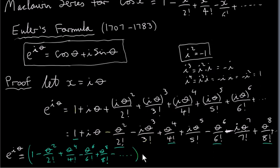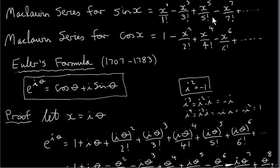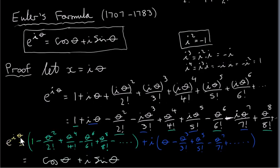Now let's look at the imaginary part — all the terms that contain i. Taking i out of those terms, we have theta, minus theta cubed over 3 factorial, theta to the power of 5 over 5 factorial, then minus theta to the power of 7 over 7 factorial, etc. This series is the Maclaurin series for sin of x, if we replace x with theta. So indeed, e to the power of i times theta can be written as cos of theta plus i times sin of theta. Note that theta must be in radians — nothing is valid if theta is in degrees; everything is valid if theta is in radians.